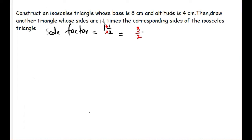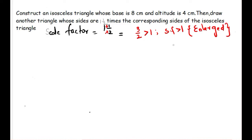As discussed in the previous video, if the numerator is bigger than the denominator, the value of the fraction will be greater than 1. So in this case we got a scale factor greater than 1. When the scale factor is greater than 1, the resultant similar triangle will be enlarged — that means larger than the original triangle. So we will get an enlarged figure.